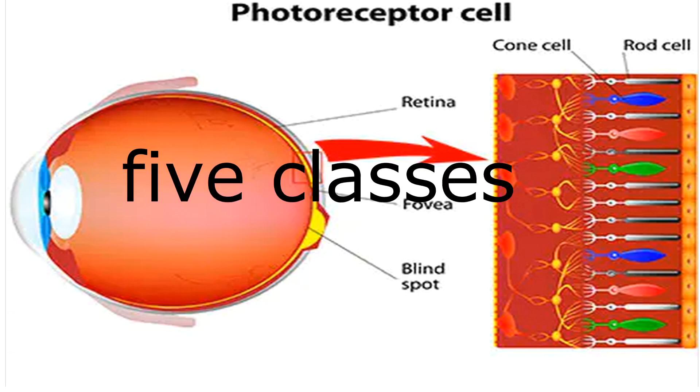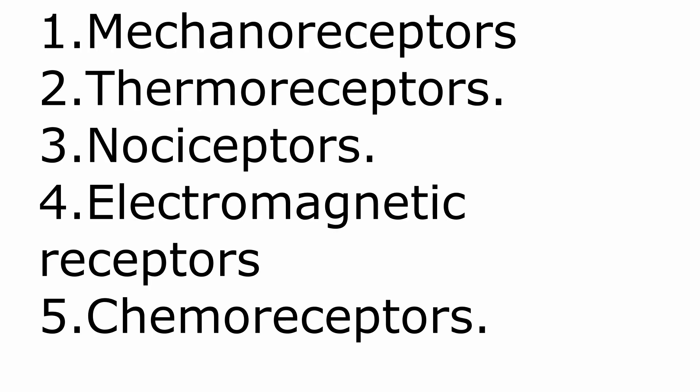In Neuroanatomy, there are 5 classes of receptors according to what they respond to, or what is their activating stimulus, and 2 classes according to their structure. Let's start with the classification by their activating stimulus.